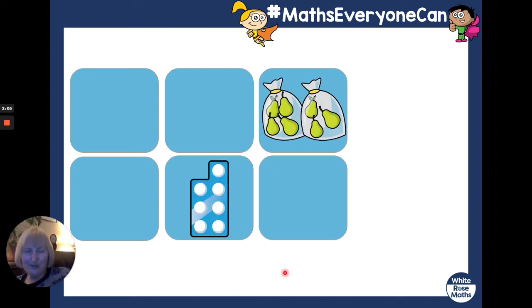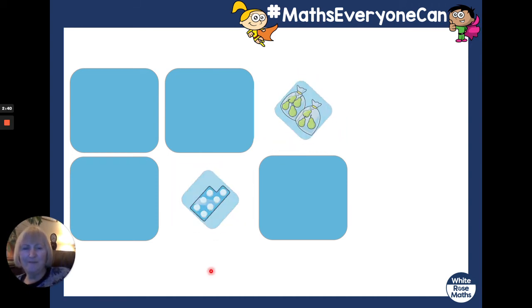Let's try these two. So, we've just counted the fruit. Was it seven? One, two, three, four, five, six, seven. Now, let's count the numicon shape. One, two, three, four, five, six, seven. So, this card and this card can go together. Seven pieces of fruit, seven spots on the numicon. Yay!